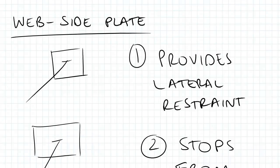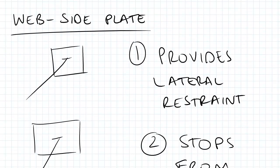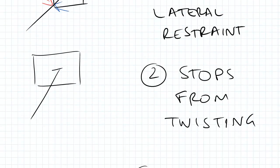Something I want to quickly touch on is a web plate connection, just to help you appreciate some of the forces and restraints. So if we have a force coming in in this direction, this connection here will be providing some lateral restraint against that force. And if we have a twisting motion, this connection will provide a restraint against that as well.